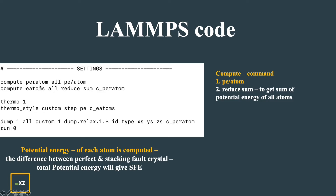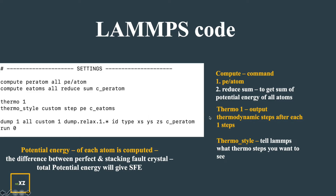I use thermo 1, which outputs thermodynamic data after each step. The thermo style specifies which properties to output: step, potential energy, and total energy of the atoms. I dump all this so I have different dump files for each relaxation step, including X, Y, Z, and potential energy per atom. I run 0 so I can capture the initial perfect crystal structure to compare with the stacking fault.